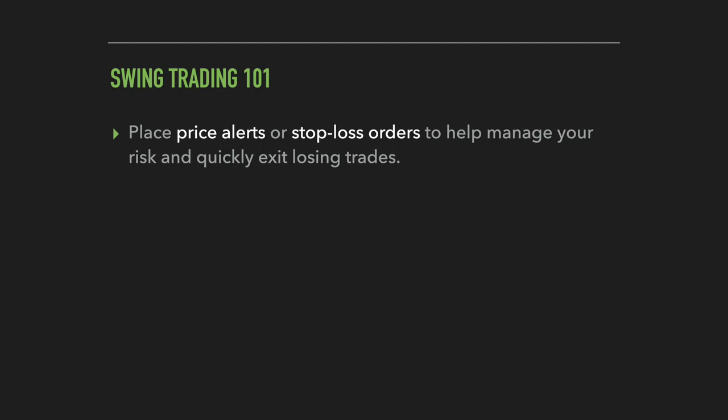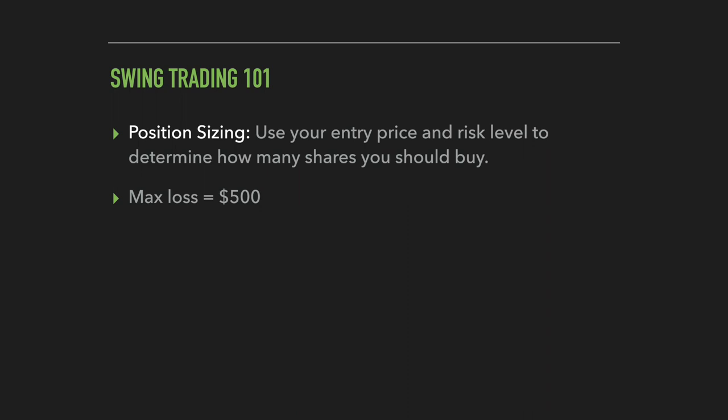When it comes to managing risk, I recommend placing price alerts or stop loss orders to help manage risk and quickly exit a losing trade. Most brokerage accounts and trading platforms have the option to place price alerts that notify you when a stock reaches a certain price, whether to the upside or downside. This is very helpful if you can't actively monitor your swing trades, like if you have a full-time job. The alternative is to use a stop loss order, but the key issue with stop losses is that they do not work during extended hours trading — pre-market and after-hours will not activate your stop loss orders even if the price reaches your stop price. Nonetheless, they're still great for managing risk and getting you out of positions even when you're not actively watching.